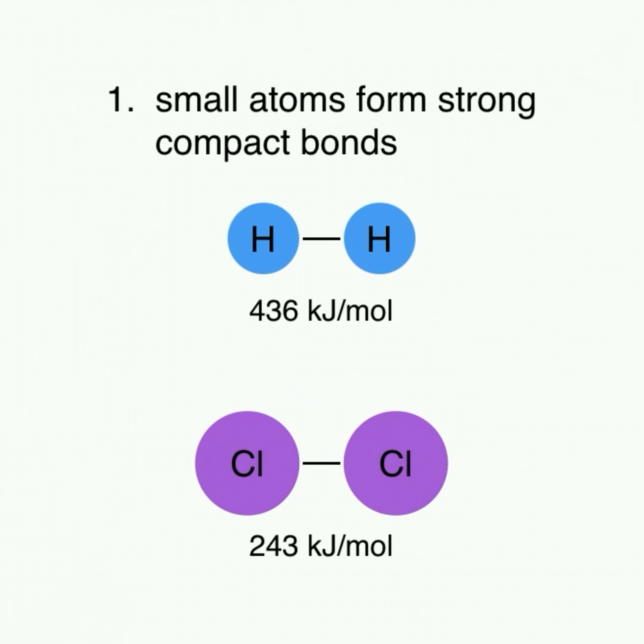Firstly, we know that the sizes of atoms affect the strength of a bond and that small atoms form strong, compact bonds. In terms of strength, as we can see here, a dihydrogen molecule has a much larger bond dissociation energy than dichlorine because hydrogen atoms are smaller than chlorine atoms.